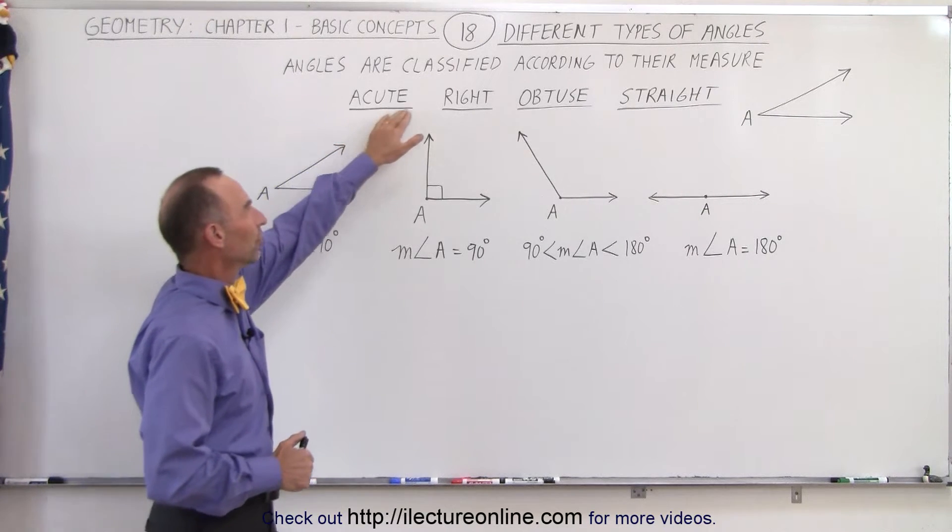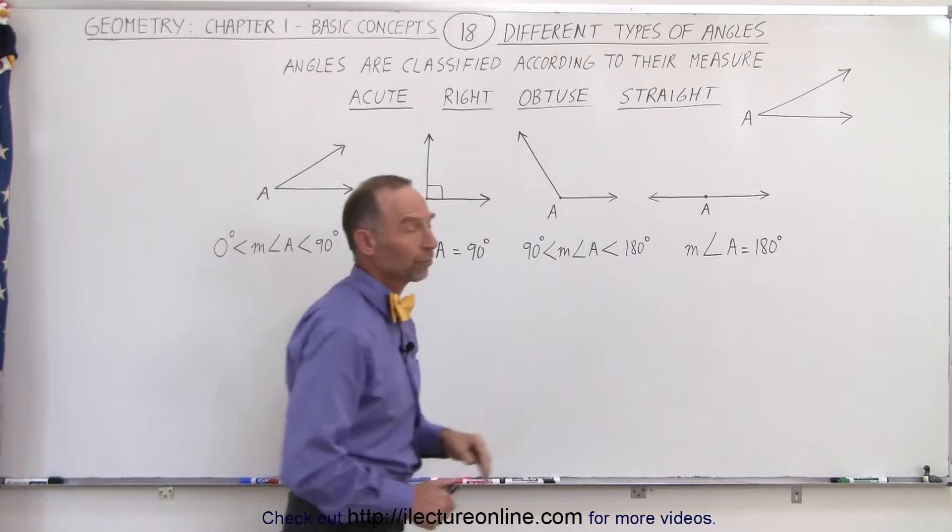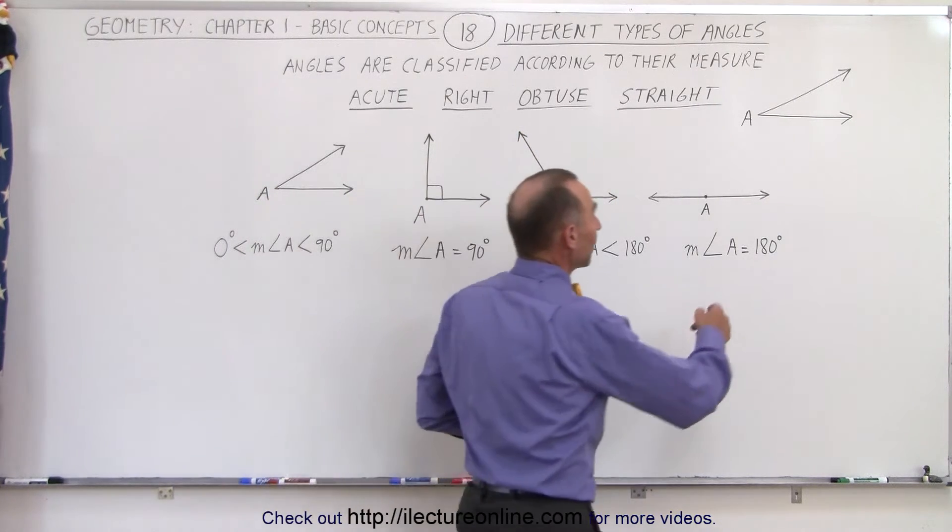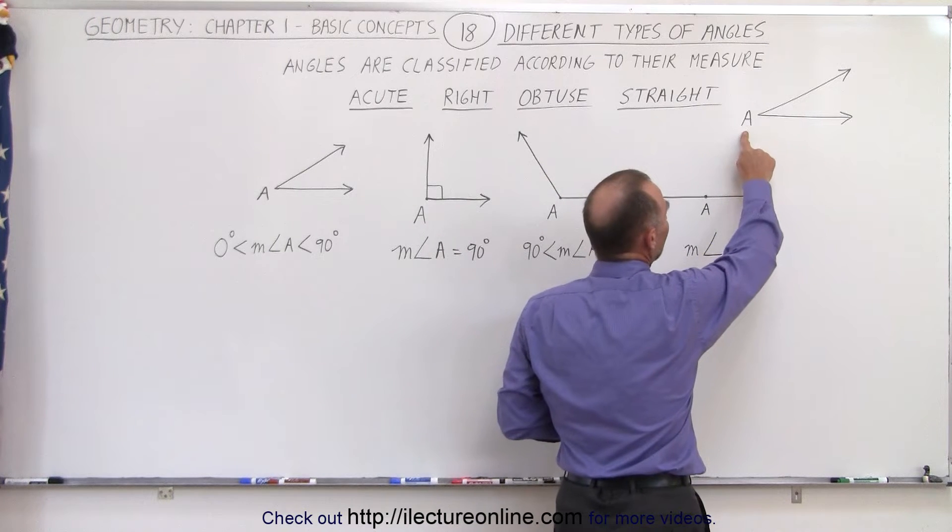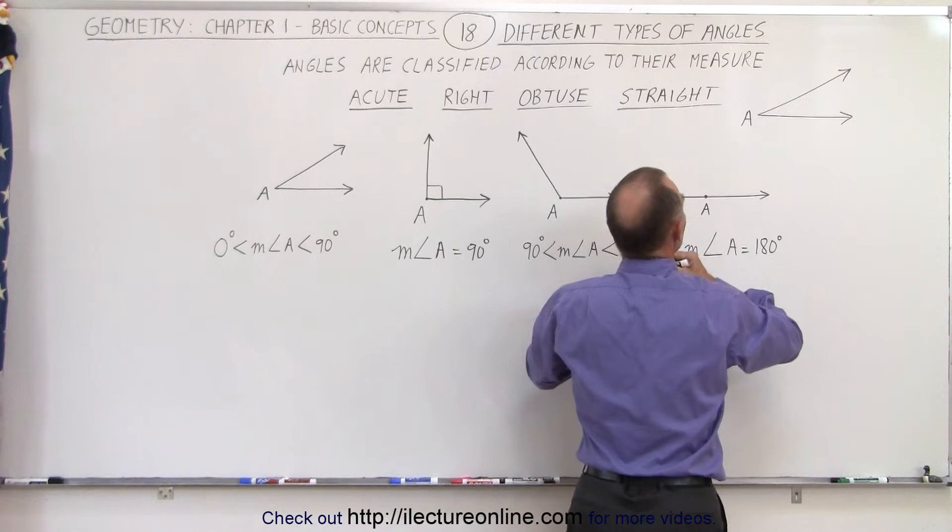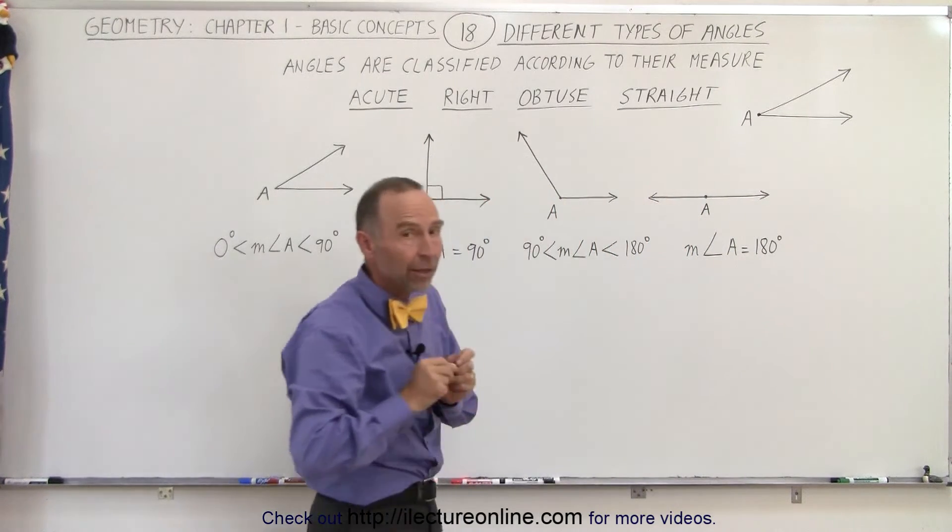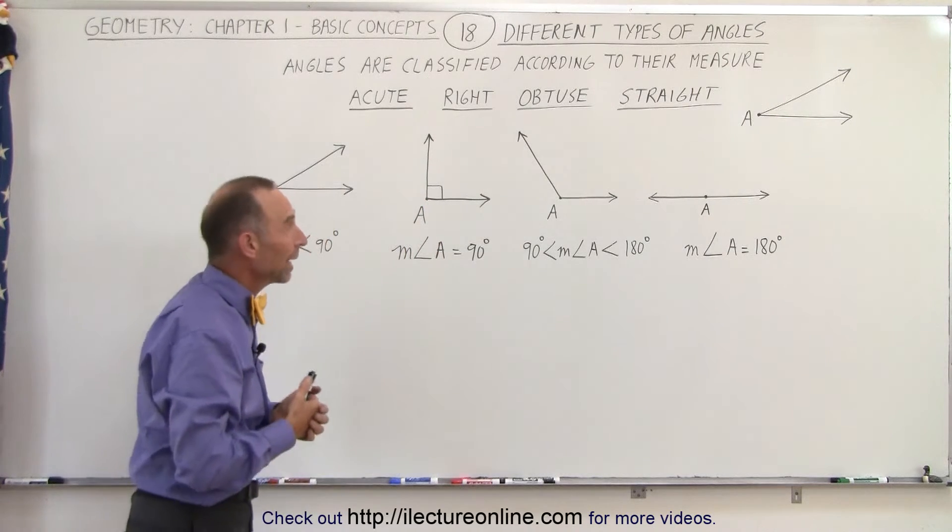We have acute angles, right angles, obtuse angles, and straight angles. Also for our benefit sometimes we can indicate that an angle only has one letter associated with it which would be the point of the vertex. So this would be the vertex point A and so we can classify an angle by its vertex point A.